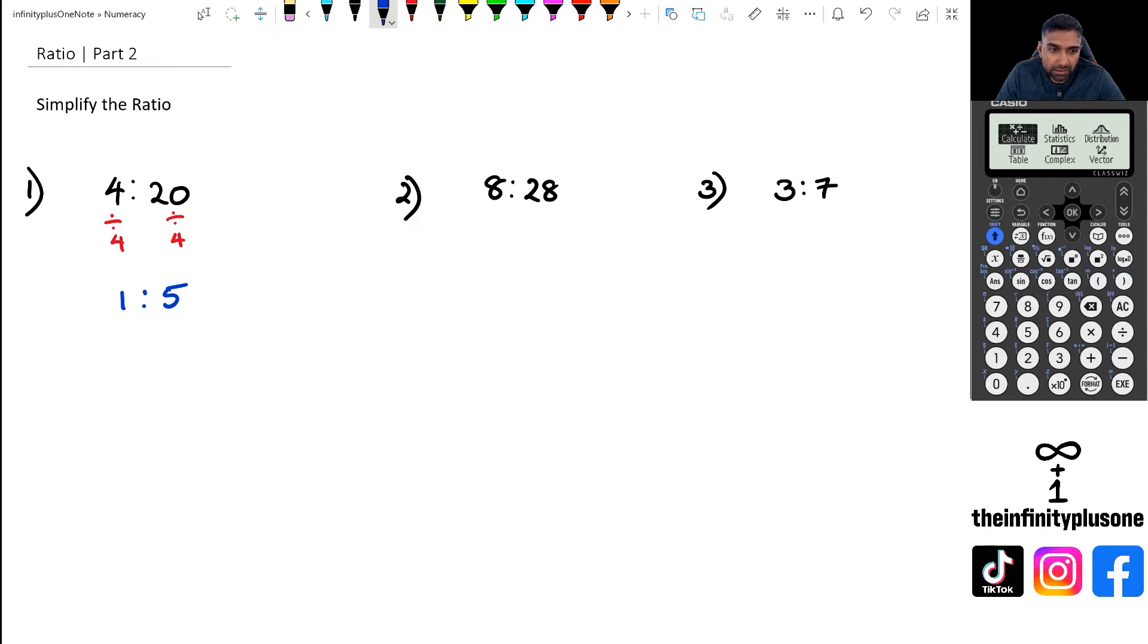Now if we were to think about this as fractions, 4 to 20 you would actually write this as 4 over 20, and of course you could simplify this fraction because 4 is a common factor in both of these numbers. And when we do this we are going to get 4 divided by 4 is 1 and 20 divided by 4 is 5. And what you'll notice is that you're pretty much getting the same answer but just written in a slightly different way. It's kind of the same idea for ratios as well.